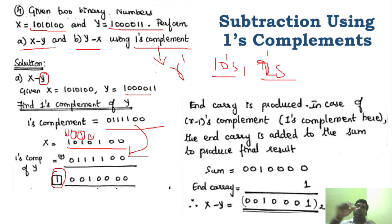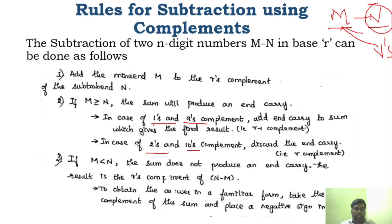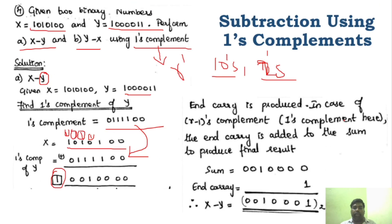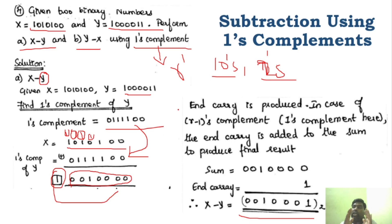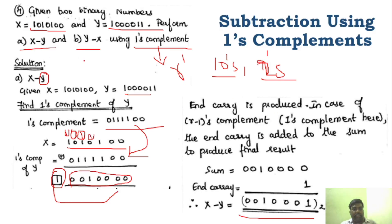If end carry is produced — this is the one's complement rule, and the same applies for 9's complement — we add that carry back to the sum to get the subtraction answer. So this is the one's complement rule: find the one's complement of y, add it with x, if end carry is produced, add that carry back to the sum. Right, so this is the first case.